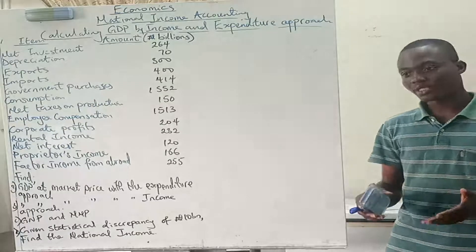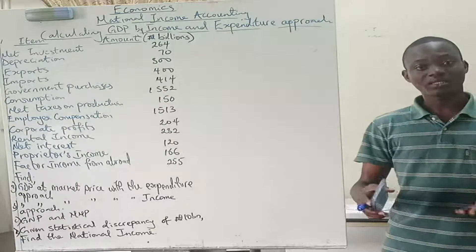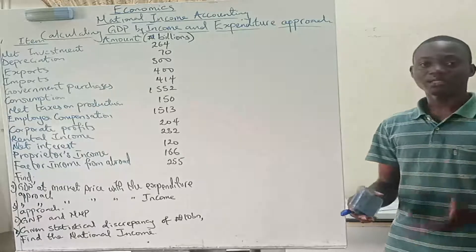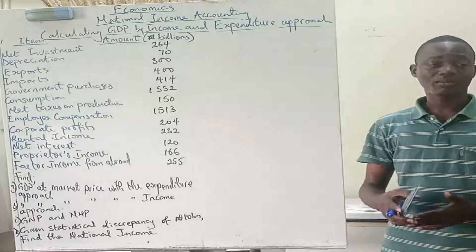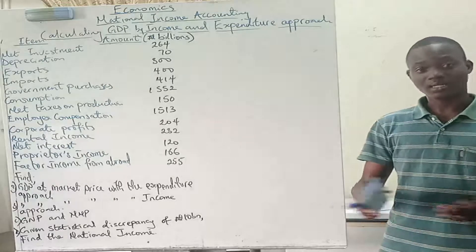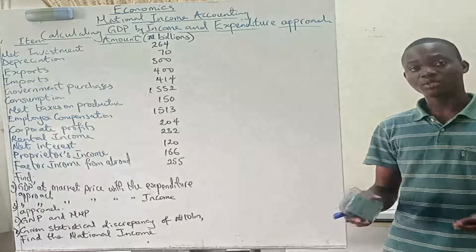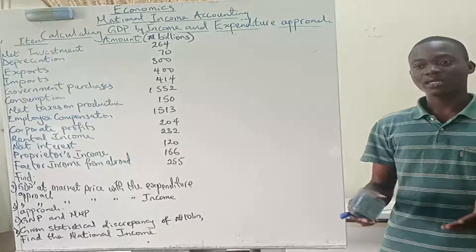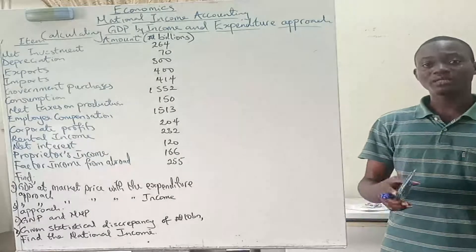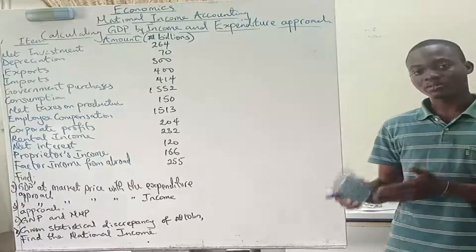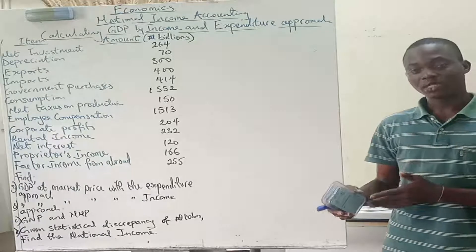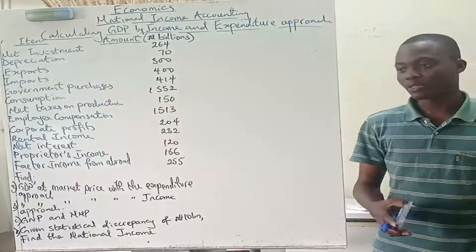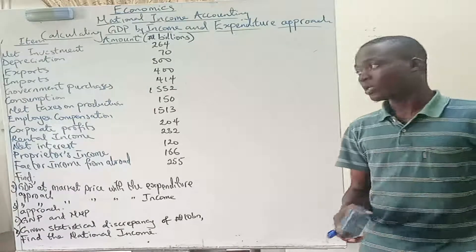The profits that companies make, as long as they belong to the citizens of a particular country, are included in the national income of that country. For example, if I as a Nigerian am working in Canada and earn a certain income in a particular year, that is going to be included in Nigeria's national income for that year.